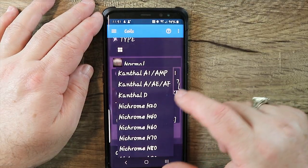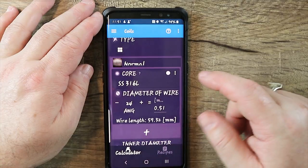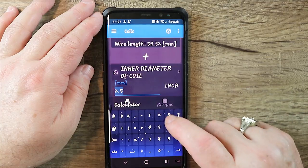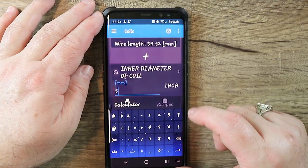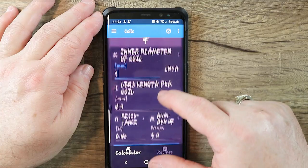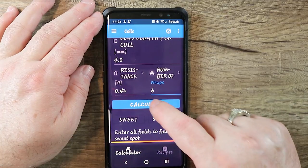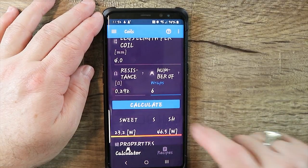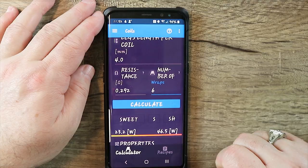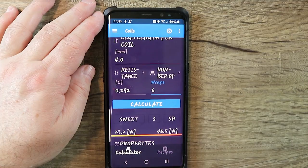We're going to be using stainless steel 316. We have 24 gauge stainless steel 316, that's what we're using. We're going to be having a 3mm inner diameter, that means the inside of the coil is going to be 3mm wide. Coil length we'll leave there. We'll do, let's do 6 wraps. And now you hit Calculate, and now it tells you my build is going to come out to .292, which is fine, right around .3. That's where I like to vape on a single coil atomizer, and my sweet spot is going to be anywhere from 23 to 46 watts.